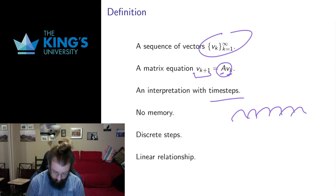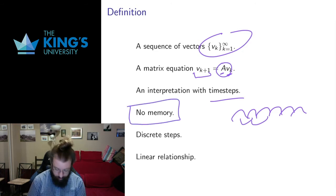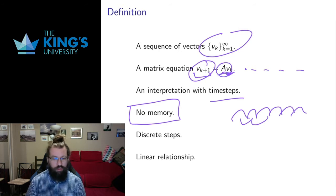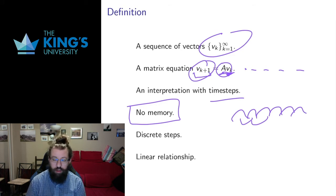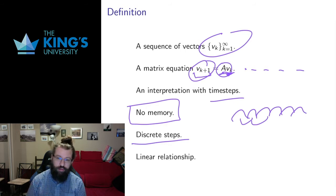It's the same matrix that goes from time step 1 to time step 2, time step 2 to time step 3, and so forth. The system has no memory — it only looks at what the previous state V_K was. The evolution depends only on exactly where it is right now. It moves in discrete steps, which is different from calculus models that move continuously.